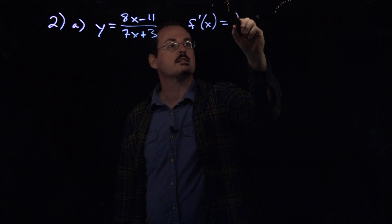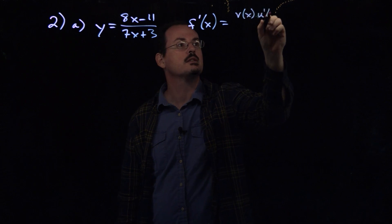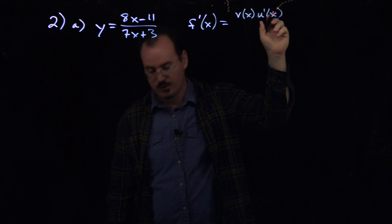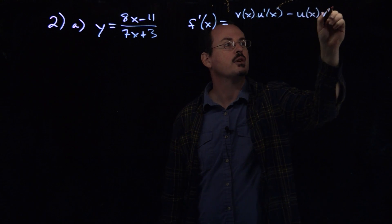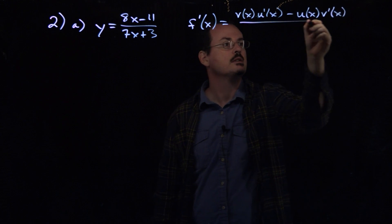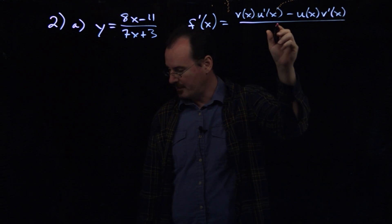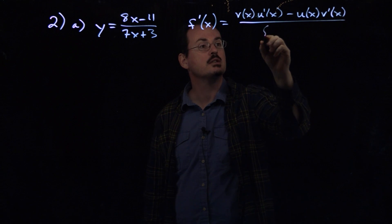So it's v of x, u prime of x, and then minus u of x, v prime of x, and then all of this divided by the denominator function, whatever it happens to be, squared.